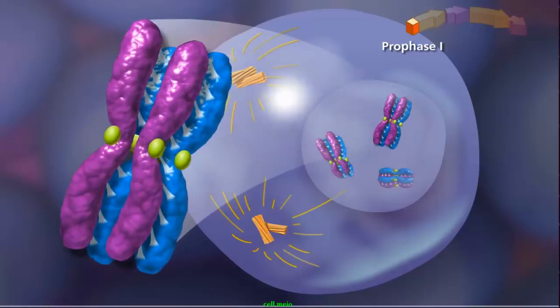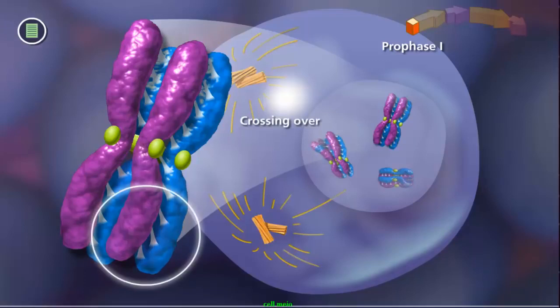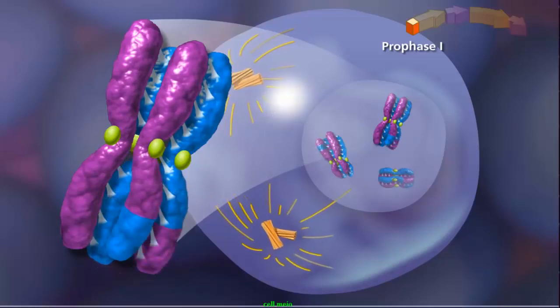Once this structure is formed, the second event, called crossing over, can occur. During crossing over, a physical exchange between chromosome segments of non-sister chromatids occurs, increasing genetic diversity.